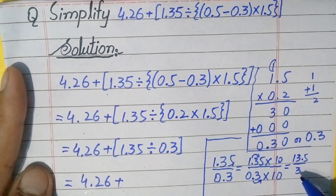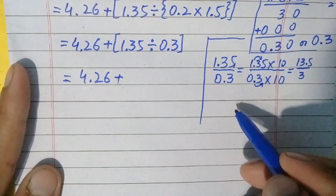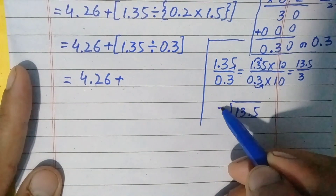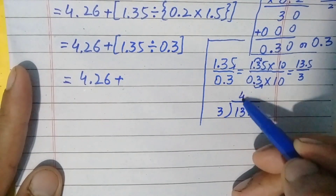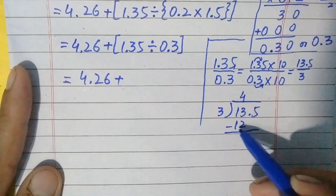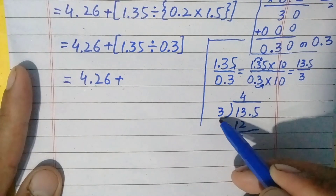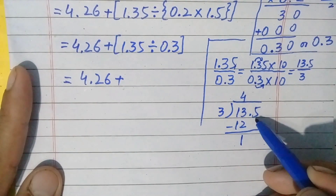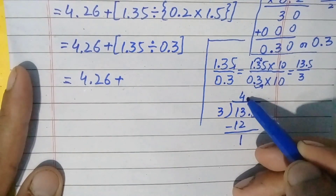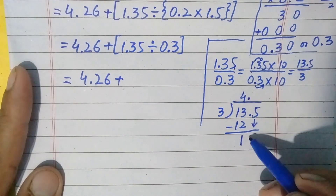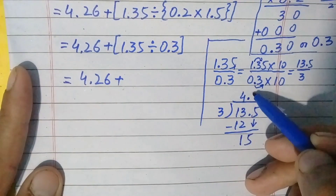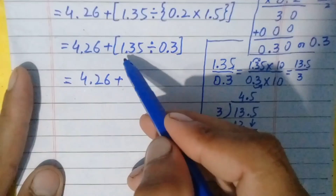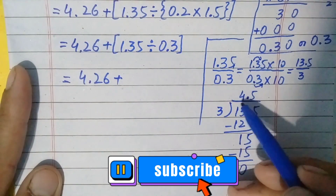We will do this division in the rough work. Write 13.5 in the dividend place and 3 in the divisor place. 3 times 4 is 12; subtracting 12 from 13 gives 1. This 1 is not divisible by 3, so we jump from the whole part to the decimal part, placing a point in the quotient. Bring down 5, making it 15. 3 times 5 is 15; the remainder is 0 and the answer is 4.5. So dividing 1.35 by 0.3 gives 4.5.